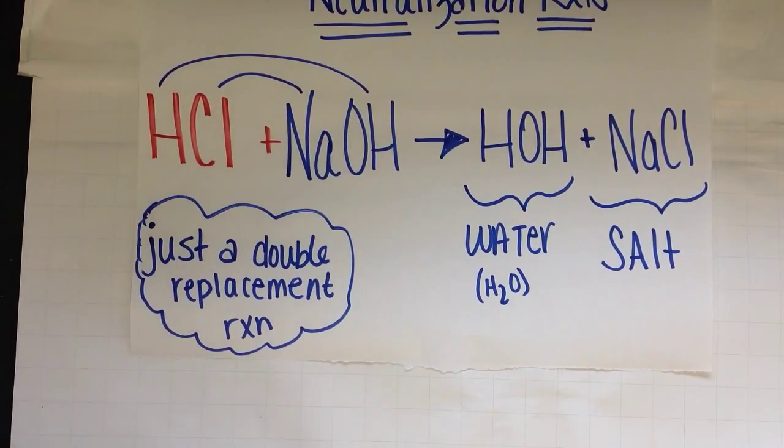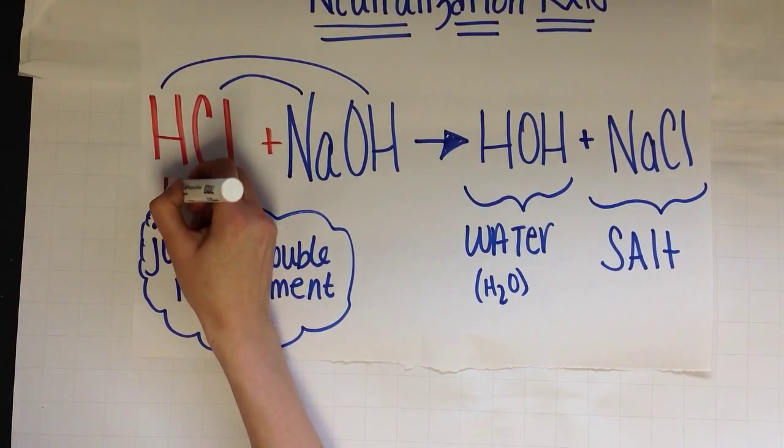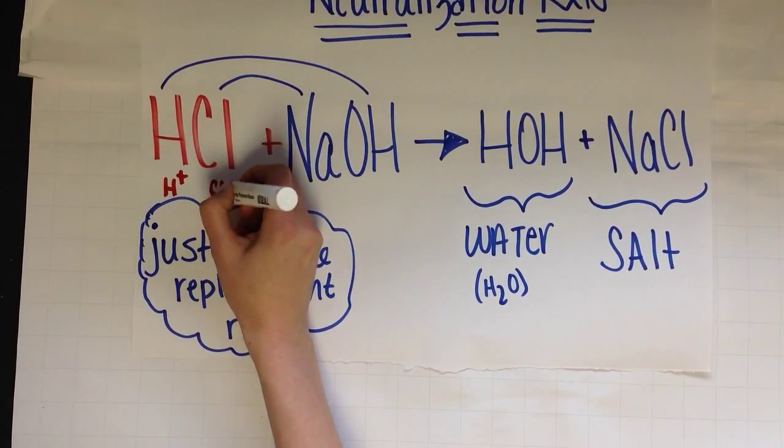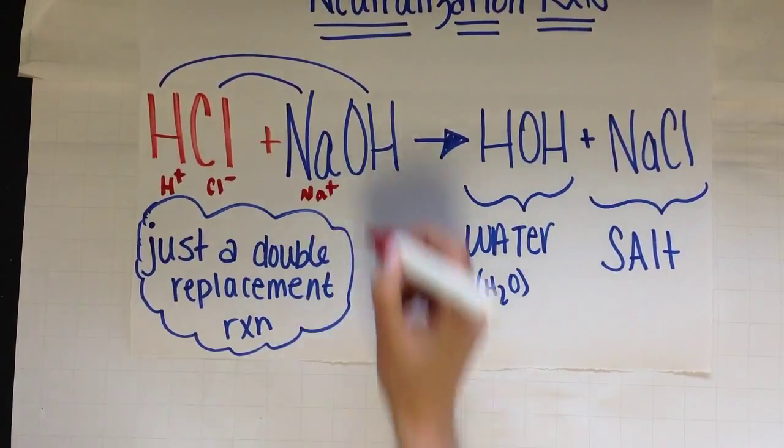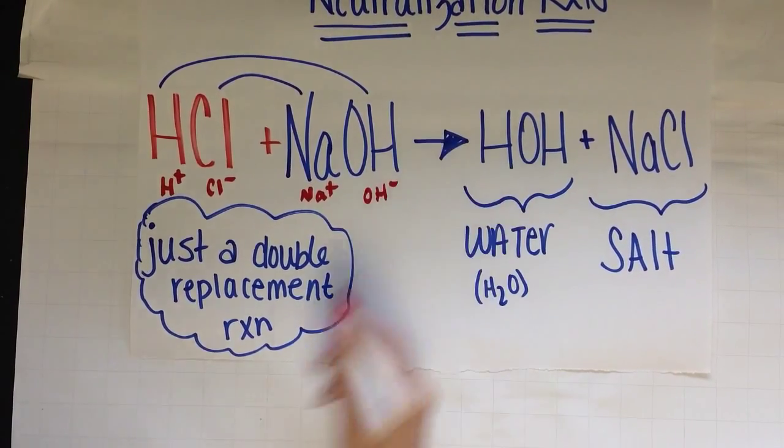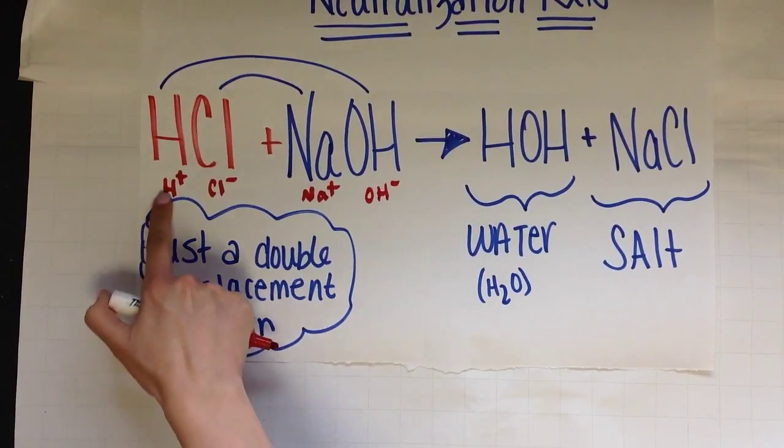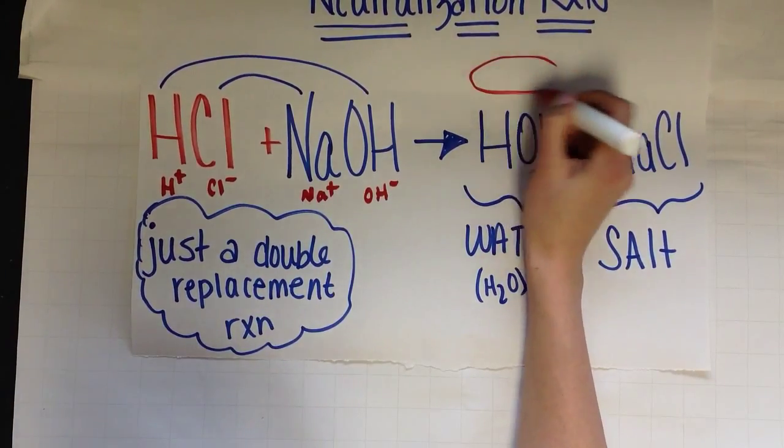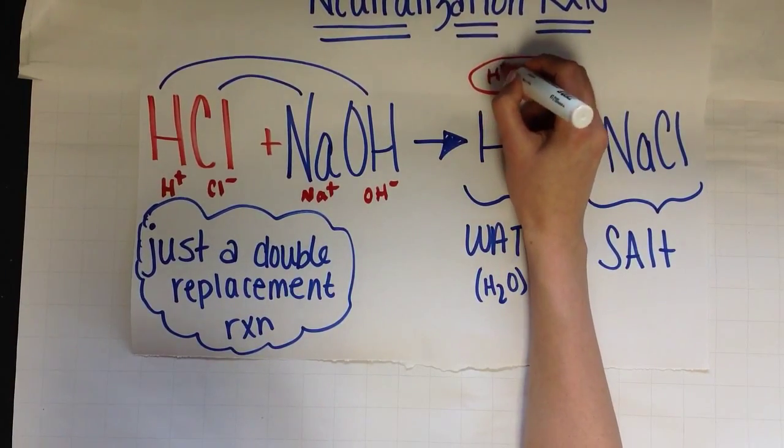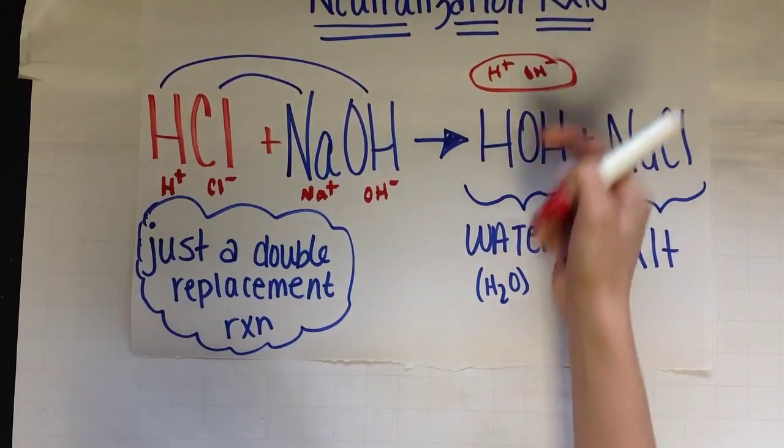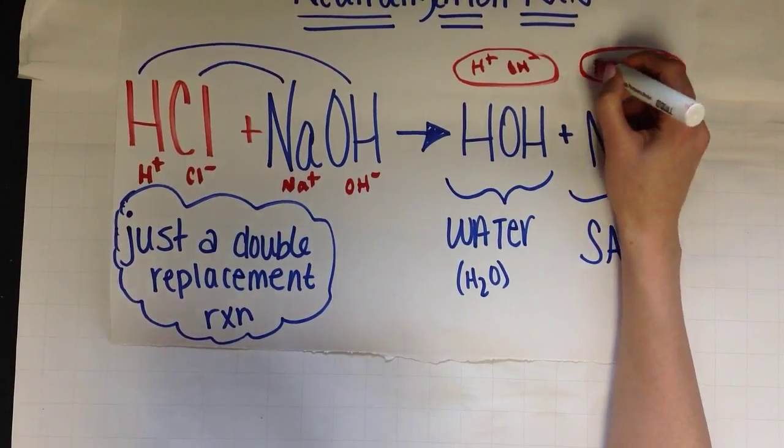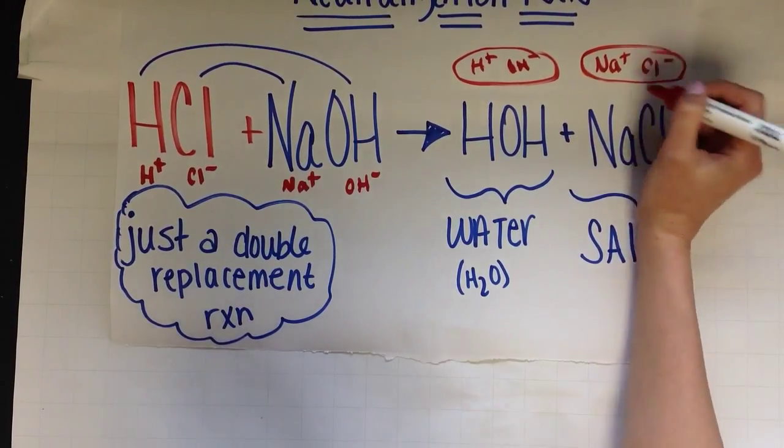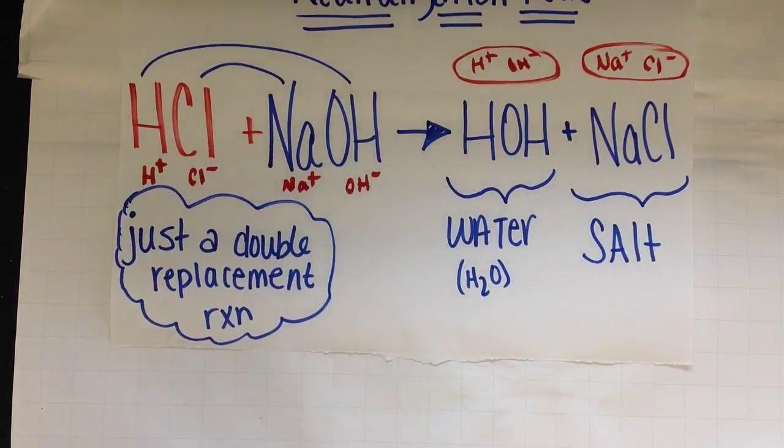So our H+ and our OH- come together. So what's important to do is to identify your ions: H+, Cl-, sodium has Na+, hydroxide is OH-. And then swap them. So the H links up with the OH. So up here, you would have had your H+ and your OH- coming together to make water. And then over here, you would have had your Na+ and your Cl- coming together to make NaCl, which is salt.